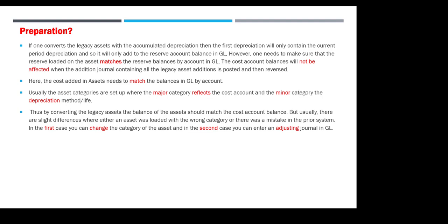You can also use an adjusting journal in GL to correct errors. However, don't try to make adjustments for assets in GL only, because the records and reports in the sub-ledger for assets will not match GL. You have to start the correction from the sub-module then go to GL, because at end of week or end of month you need to reconcile between your sub-ledger and your main module GL.